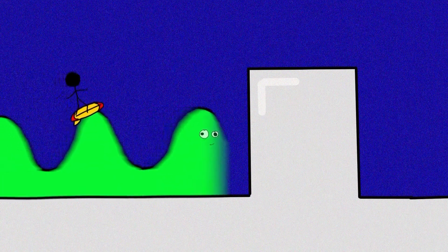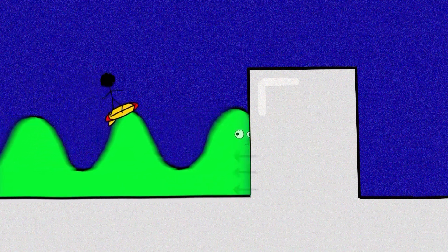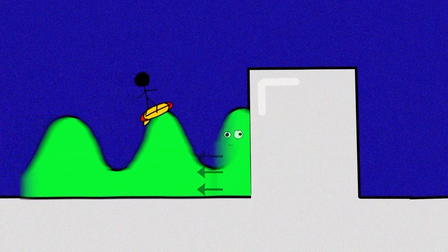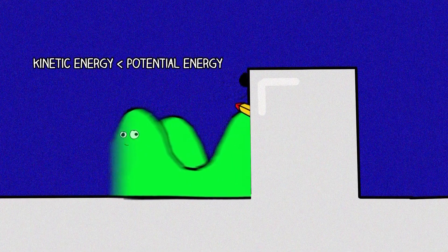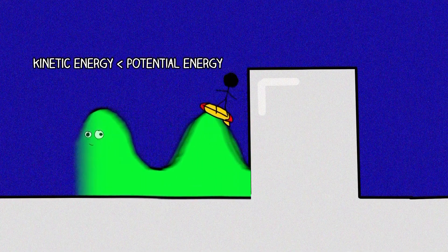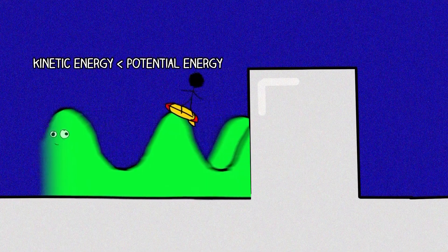So now, instead of imagining a particle traveling toward a barrier, imagine a wave traveling toward a barrier. When this wave collides with the barrier, because the electron doesn't have enough kinetic energy to make it over, it gets reflected. But wait — what about the whole tunneling thing?